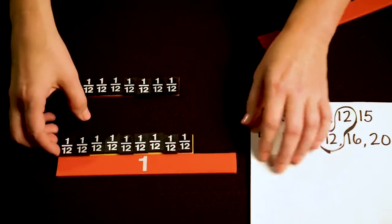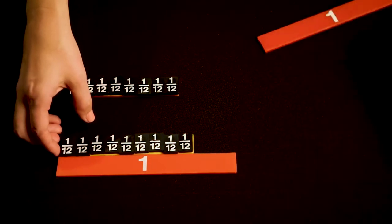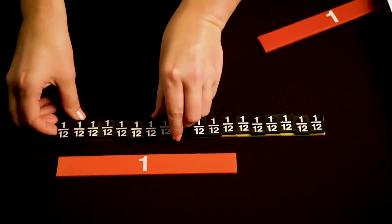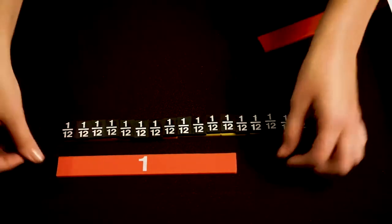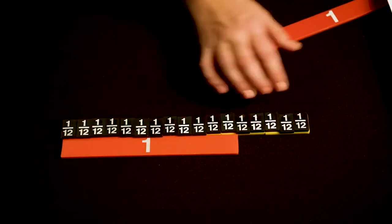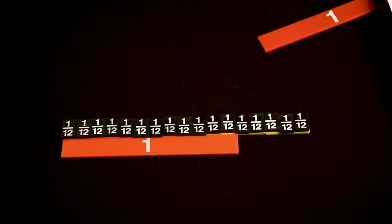Go ahead and move my multiples out of the way. So here I've got 8 twelfths and 9 twelfths. And when I add those together, I can see that my answer is 1 and 5 twelfths.